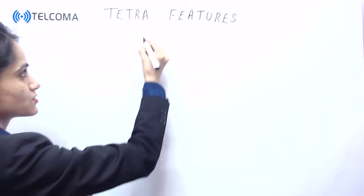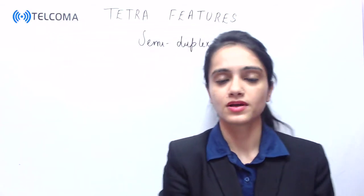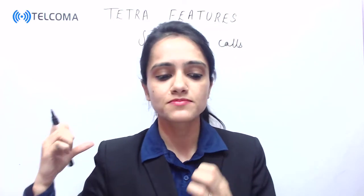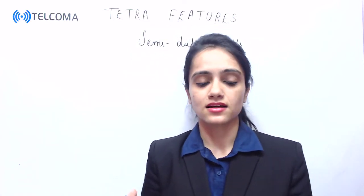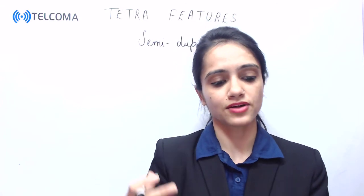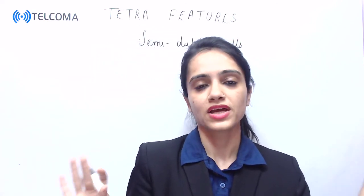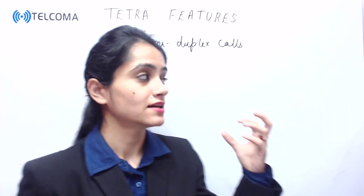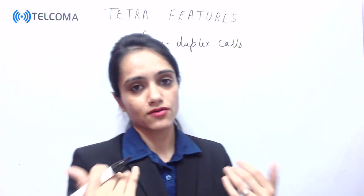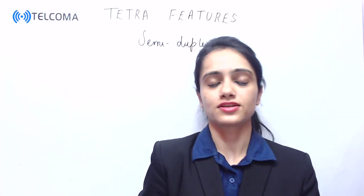Group calls are always established as semi-duplex calls for all subscribers. By pressing the PTT, a listening subscriber can request a speech item. Speech items are allocated based on the priority queue. The talking subscriber uses an already allocated traffic channel on the uplink, while a listening subscriber must press PTT to request a speech item. This is the feature of TETRA technology.